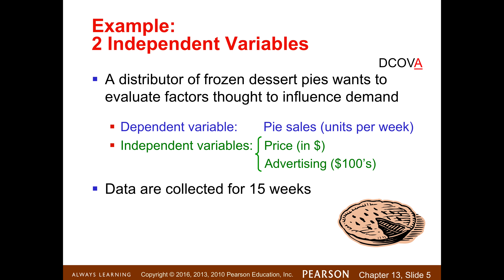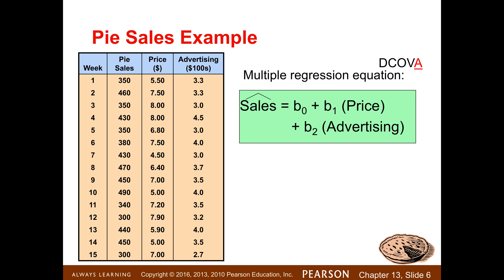What we want to predict is our dependent variable. In this example, it's the number of pies sold per week. Our predictors, our independent variables, are the price of the pies and the amount of advertising in hundreds of dollars. Data was collected for 15 weeks. In week one, 350 pies were sold at a price of $5.50 each, and advertising was 3.3, which is in hundreds of dollars — so that would be $330 in advertising. We want to fit a multiple regression equation to predict sales based on price and advertising.